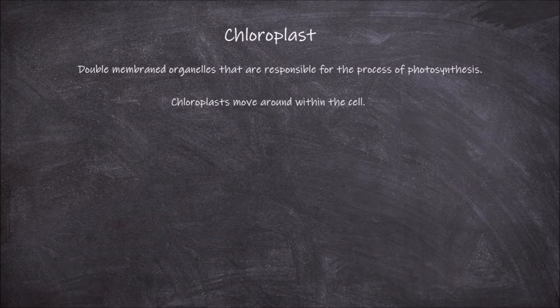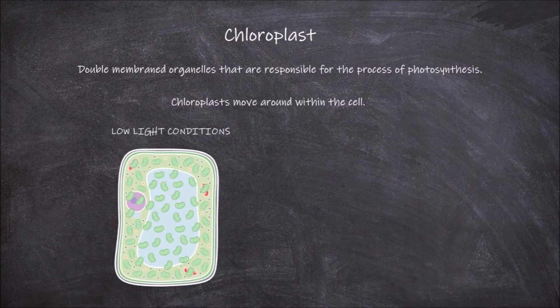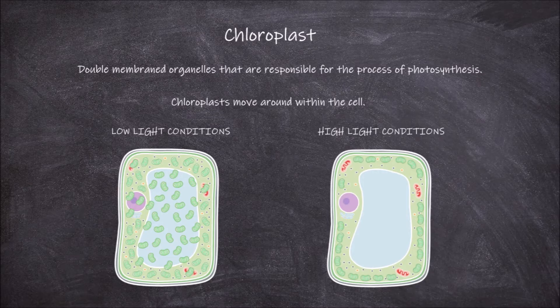Chloroplasts move around within the cell, which allows them to align themselves in the most favourable position for absorbing light. When they are in lower light conditions, the chloroplasts will align in a sheet-like fashion for optimal light exposure. When there is too much light, they will orientate in a way to reduce light exposure within the cell, and the damage that too much light exposure causes, called photooxidative damage.